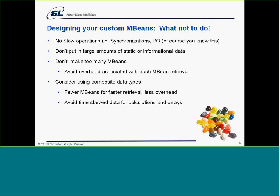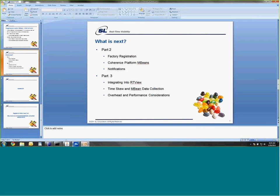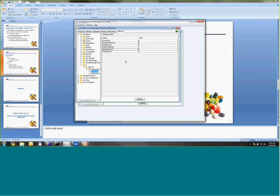So that is just the simple what-not-to-do, and I'm running about right on time. What we're going to talk about later: factory registration, Coherence platforms, notifications, some of the new features within the 3.6 module. We want to talk and show some integration with RQView and how to consume custom MBEs. We'll talk more about time skew and MBE data collection, as well as some performance and overhead considerations. We've started a few minutes late, and I do have about five minutes here, so I wanted to go out and show you some examples of these first items we talked about.